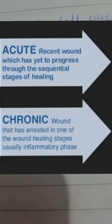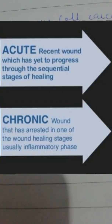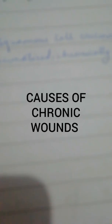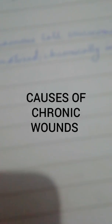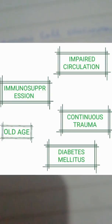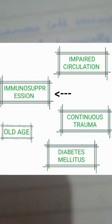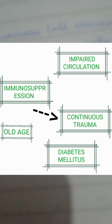The stage of healing most commonly found in chronic wounds is the inflammatory phase. This impaired healing may be due to a number of causes, which can include impaired circulation — so if the wound does not get enough blood supply it won't receive nutrients and won't be healing — or immunosuppression, old age, or constant trauma to the site, or diabetes mellitus.